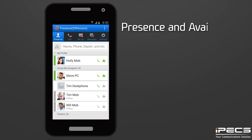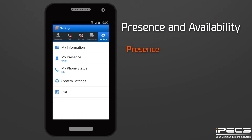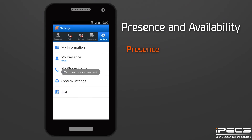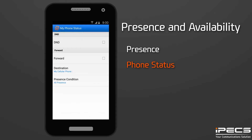Your presence status tells other users your availability to receive calls and instant messages. To manually change your presence, select My Presence in the settings menu and then choose an option from the list. In the settings menu, select the My Phone Status option to set your phone to Do Not Disturb mode or to set up call forwarding.